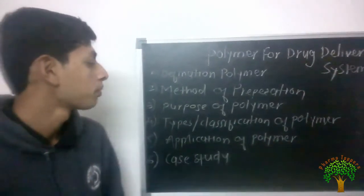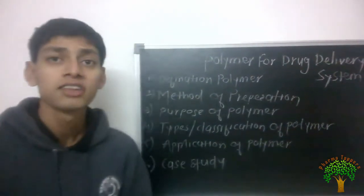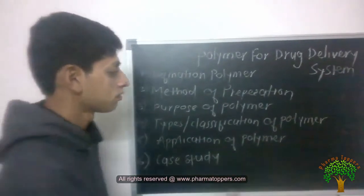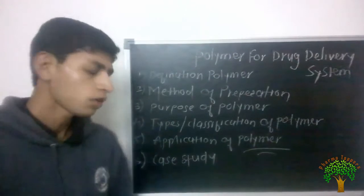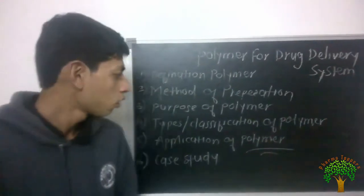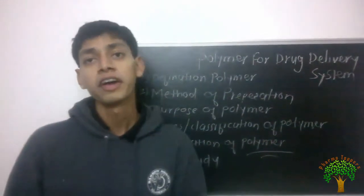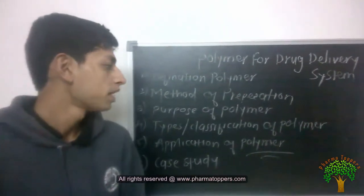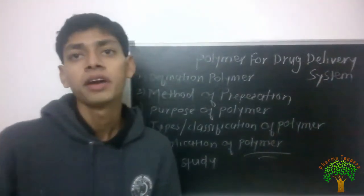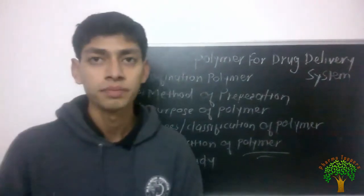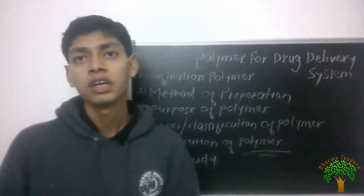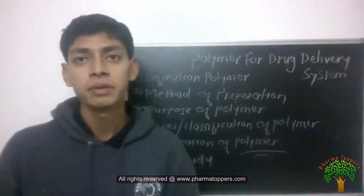Moving towards the applications of polymers in pharmacy — there are various dosage forms available in pharmaceutical sciences that require modified release of drug, targeted delivery of drug, and reduction of toxicity. All of this can be achieved by polymers. There are various delivery systems that involve polymers, such as hydrogels.